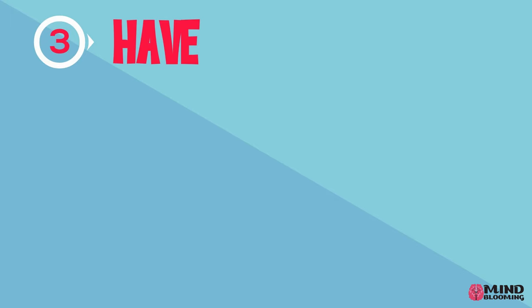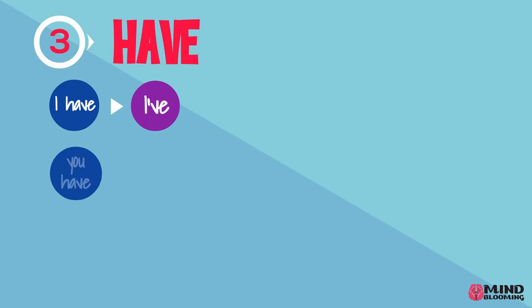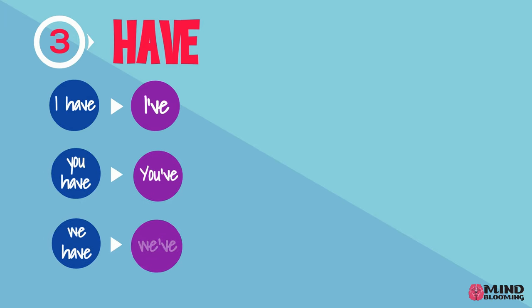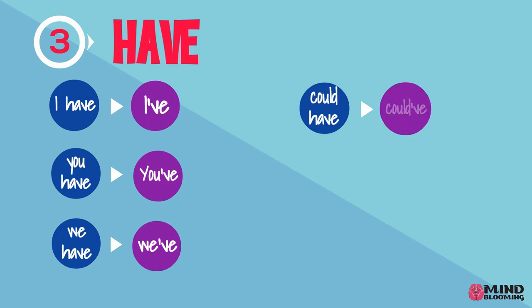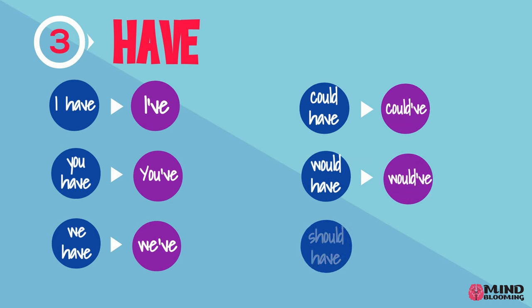Now let's take a look at have. When I say I have, I drop the H and the A and put an apostrophe. So it will be I've. You have will be you've. We have, we've. Could have, could've. Would have, would've. Should have, should've.